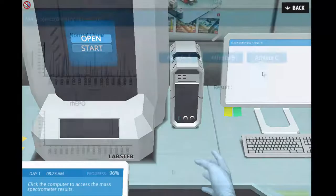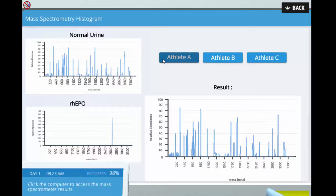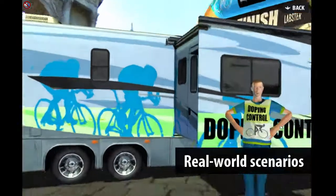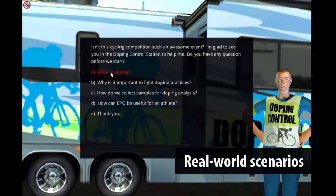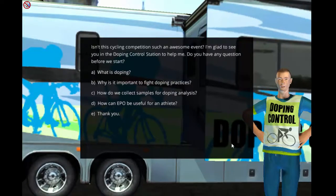In the last mission, students need to use mass spectrometry and investigate if there are any athletes who are using RHEPO as a doping substance. They will do so by collaborating with a doping agent who collects urine samples in a large bicycle race. Will they be able to find the cheating athlete?